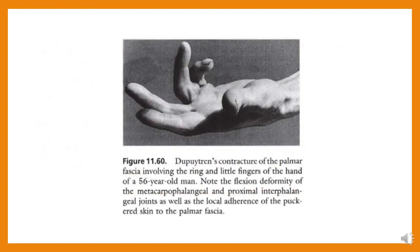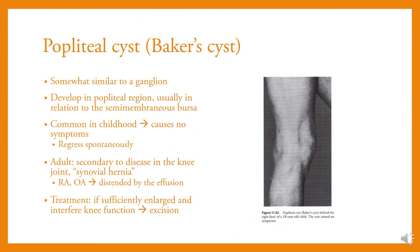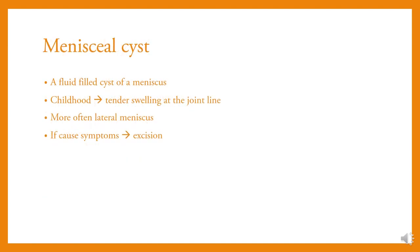Ganglion: a thin-walled cystic synovially-lined lesion containing thick clear mucinous fluid of unknown origin, arising in relation to periarticular tissue and joint capsules, limited to the hands and feet. Causes local discomfort; ganglia on the palmar head may compress the median or ulnar nerve. Tends to regress spontaneously over a long period. Treatment: excision or aspiration, though they often recur. Popliteal cyst is somewhat similar to a ganglion, developing in the popliteal region usually in relation to the semimembranosus bursa; common in childhood; in adults it is secondary to disease in the knee joint — synovial hernia. Treatment: if sufficiently enlarged and interfering with knee function, excision. Meniscal cyst is a fluid-filled cyst of a meniscus, presenting in childhood as a tender swelling at the joint line, more often on the lateral meniscus; if causing symptoms, excision.